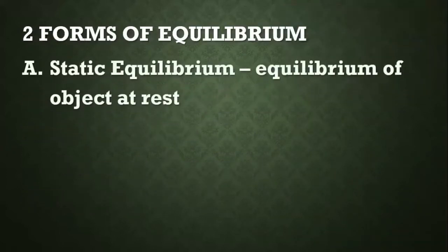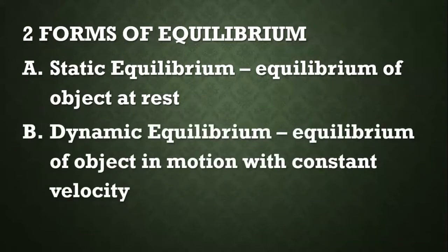There are two forms of equilibrium. One is called static equilibrium, wherein the object is at rest and not moving — all forces acting on that object are zero. The other is an object in motion with constant velocity in the same direction, where no force is acting to start or stop it, so the net force is also zero.